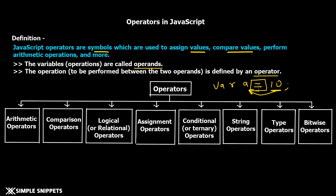There are different types of operators in JavaScript depending on what functionality they provide. We have arithmetic operators, comparison operators, logical operators, assignment operators, conditional operators, string operators, type operators, and bitwise operators. Arithmetic operators perform operations like plus, minus, multiplication, division, and modulo. Comparison operators compare two variables or entities. Logical operators use comparison operators to give results of either true or false.